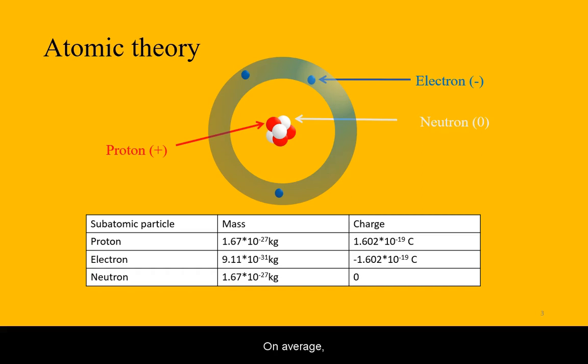On average, there is an equal number of protons and electrons in an atom, making the whole system neutral. Neutrons, while part of the nucleus, don't have a net charge.